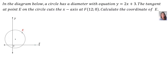Example 1. In the diagram below, a circle has a diameter with equation y = 2x + 3. The tangent at E on the circle cuts the x-axis at F, which is the point (12, 0). Calculate the coordinate of E.